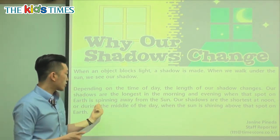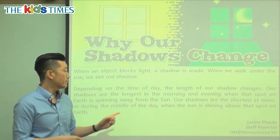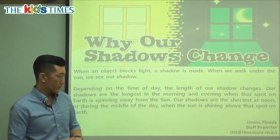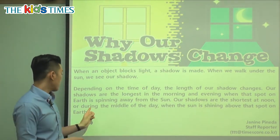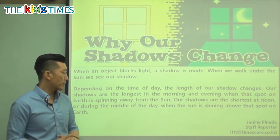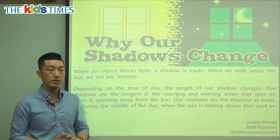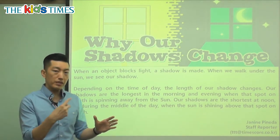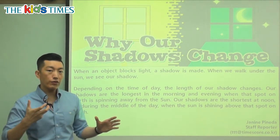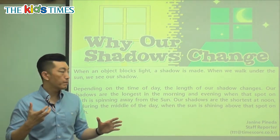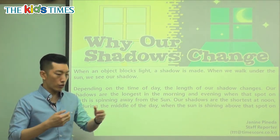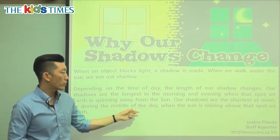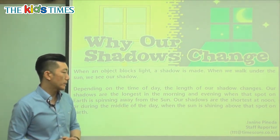Our shadows are the longest in the morning and evening, when that spot on Earth is spinning away from the sun. So when we are spinning away from the sun, that's when our shadows become very long — and that happens in the morning and in the evening.